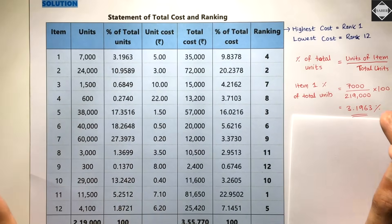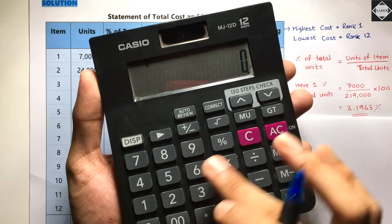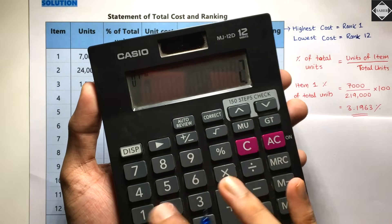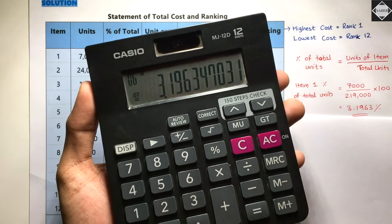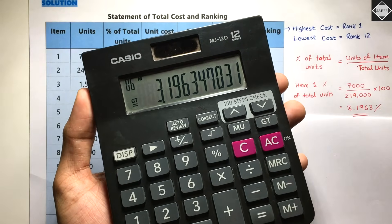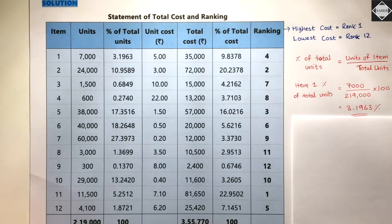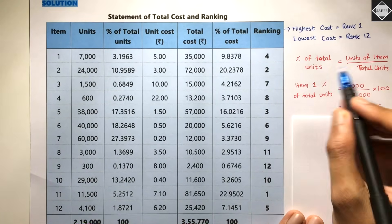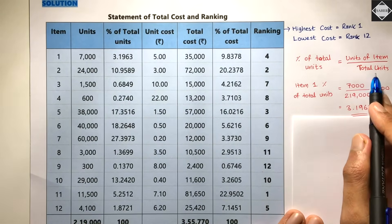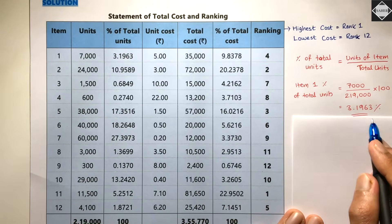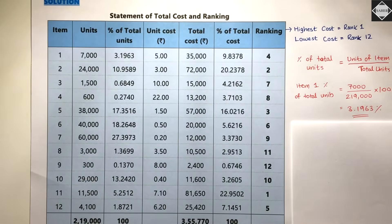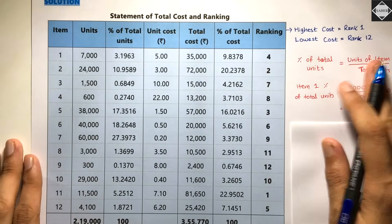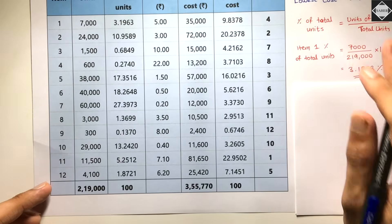For item 1, divide 7,000 by 2,19,000 and multiply by 100 — you get 3.1963%. The formula is: percentage of total units = units of the item ÷ total units × 100. However, doing this individually for all 12 items takes a lot of time, so we use a cross-multiplication calculator trick.